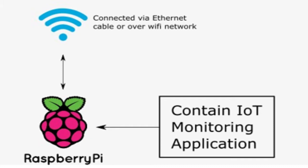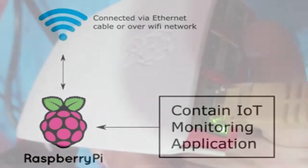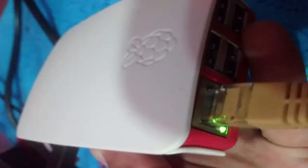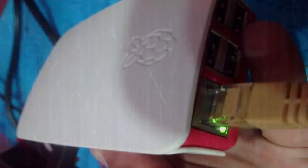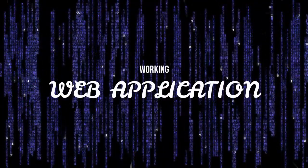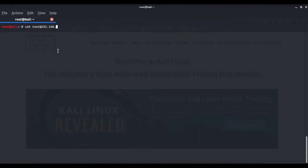After setting up the vulnerable web application on the Raspberry Pi, we connected the Raspberry Pi to our local network so that we can access it on our attacker machine. We configured the device with an operating system and configured the SSH protocol so that we can remotely access the Raspberry Pi and run the vulnerable web application remotely.